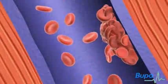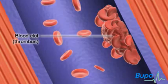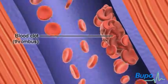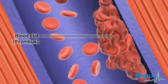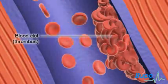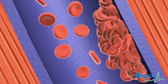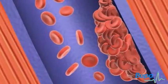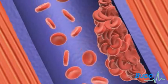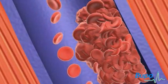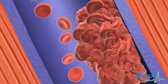DVT is where a blood clot, or thrombus, forms in a deep vein. It partly or completely blocks the flow of blood through the vein. A blood clot can form if a vein is damaged, if the flow of blood in the vein slows down, or if the blood has a higher than normal tendency to clot.